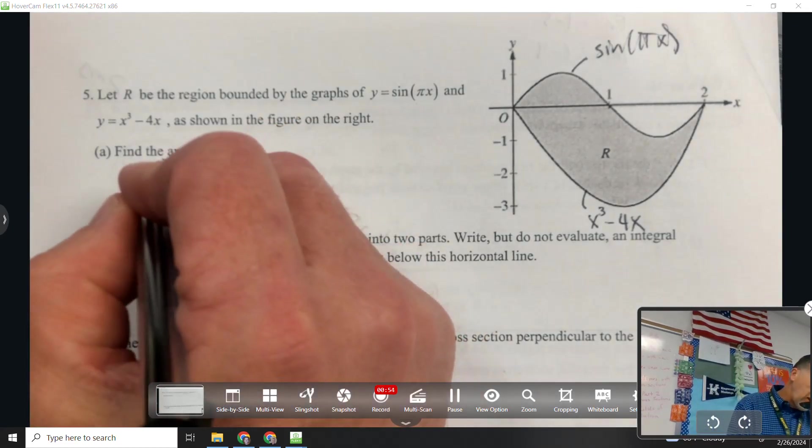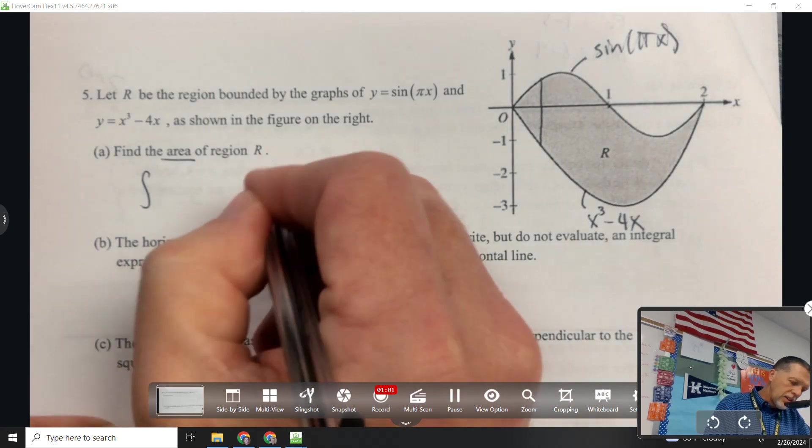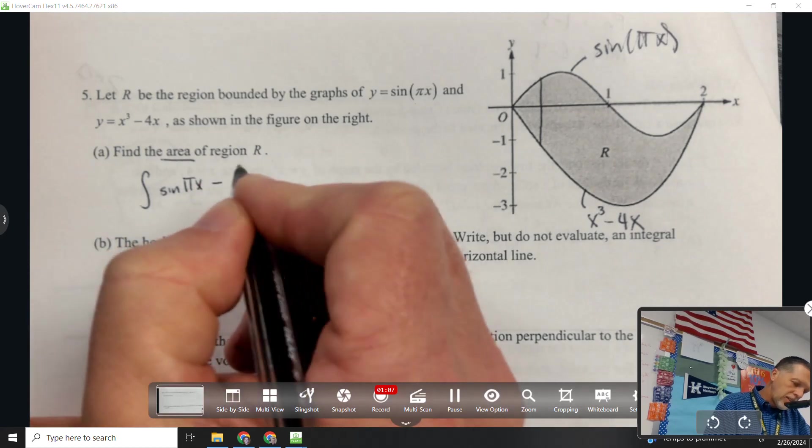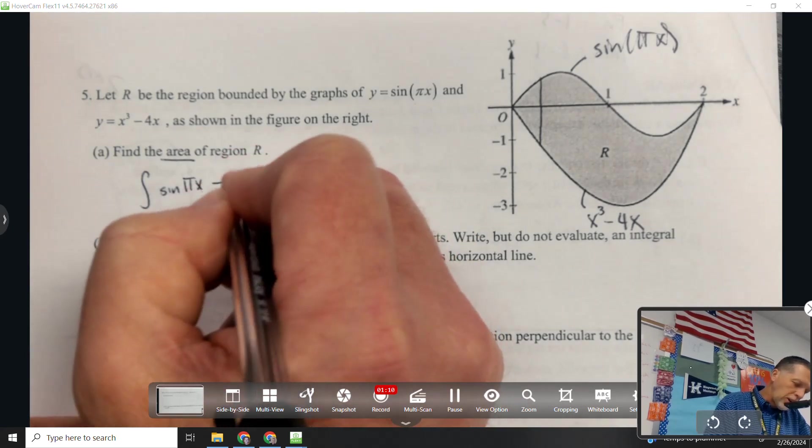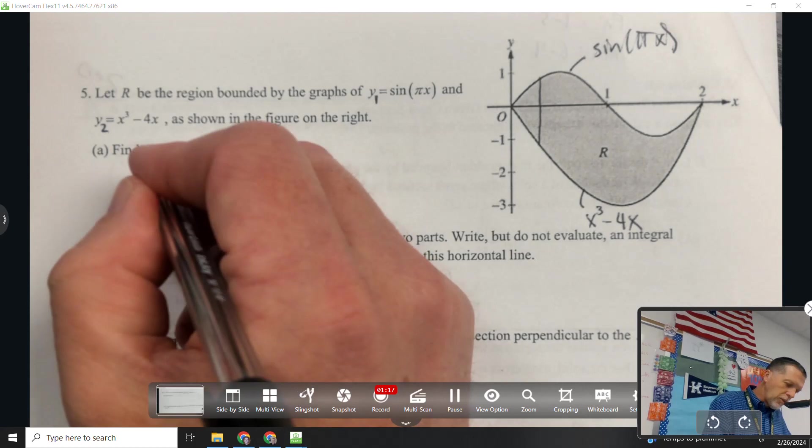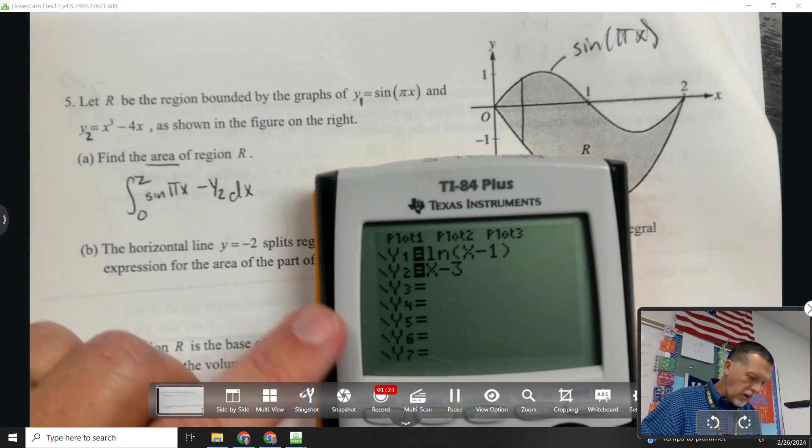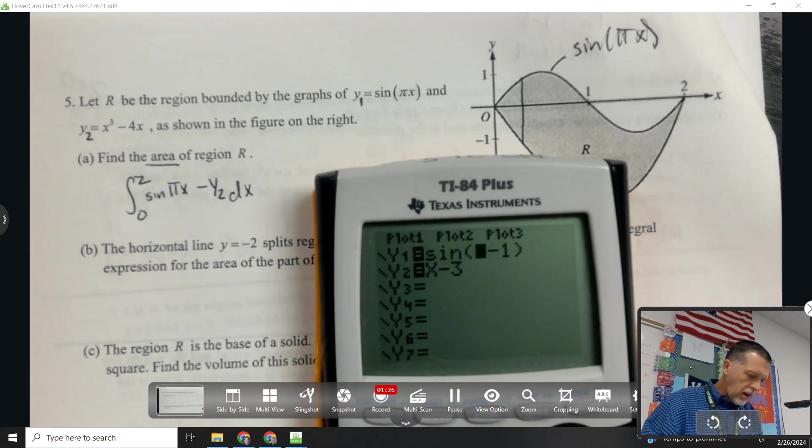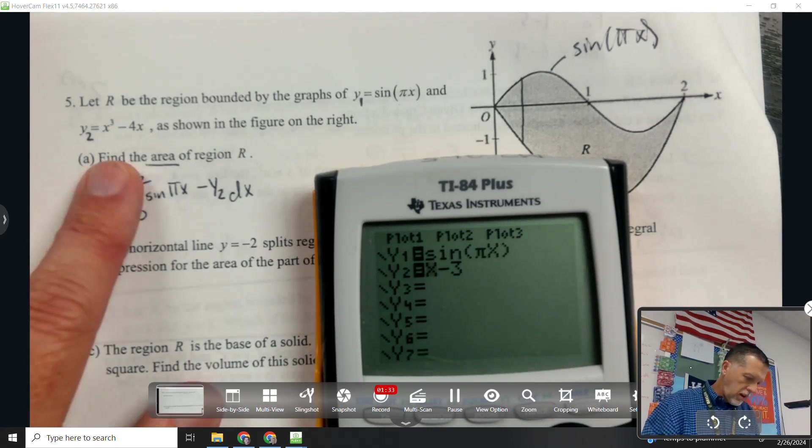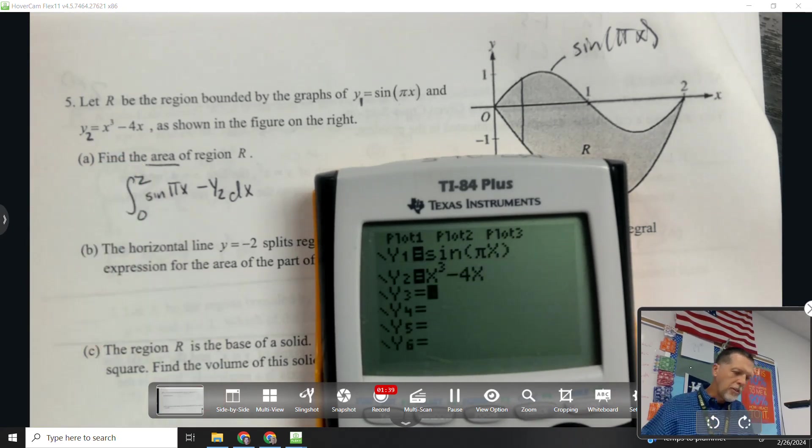Find the area. So area would be, I'm going to go dx, so top minus bottom, sine of pi x minus - out of space. I'm going to call it y2. I'm probably going to put these in the calculator. That way I don't have to type it in all the time. From 0 to 2. So after saying I didn't need to graph it on the calculator, I'm going to type it in anyway. Sine of pi x, and then x cubed minus 4x.